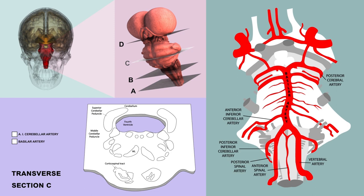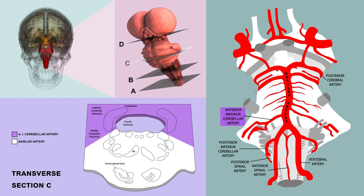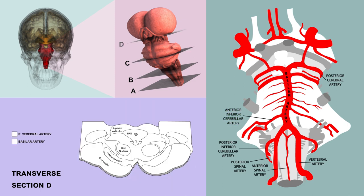The next section cuts midway through the pons. At the posterior end — which in this diagram includes a small portion of the cerebellum — the anterior inferior cerebellar arteries provide blood. At the anterior end, the vertebral arteries are joined to form the basilar artery, which supplies the entire anterior portion of the pons. The final section cuts through the midbrain, where we start to infringe on posterior cerebral artery territory, and the medial anterior midbrain is again supplied by the basilar artery.